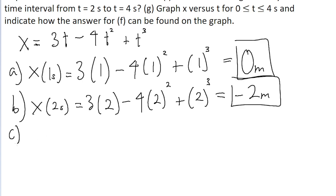Part C, our input is now 3 seconds. So it's 3 multiplied by 3 minus 4 times 3 squared plus 3 cubed. We find 0 meters.